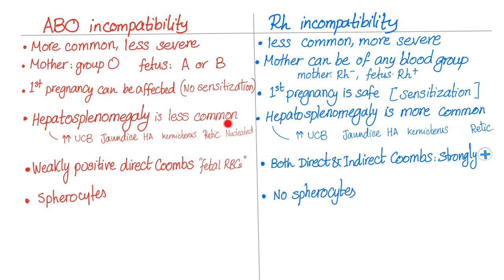In ABO incompatibility, because it is less severe, hepatosplenomegaly is less common. Unconjugated hyperbilirubinemia is less common. Jaundice is less common. Hemolytic anemia is less common. Reticulocytosis is less common. Nucleated red blood cells on the blood smear are less common. In RH incompatibility, on the other hand, all of these are more common.